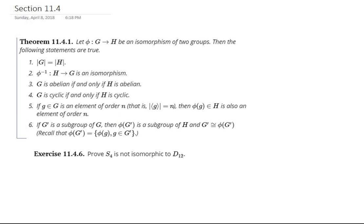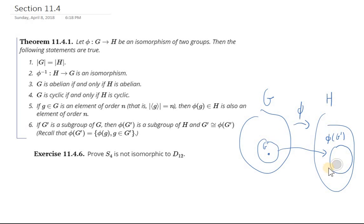Let me draw the picture so you can see what that looks like. If I have a group G and another group H, and if I have an isomorphism phi, if I have a subgroup G prime—of course, G prime is also going to contain the identity—then this G prime will map to a set. We know that phi is one-to-one and onto, so phi of G prime will map to a set of the same size.